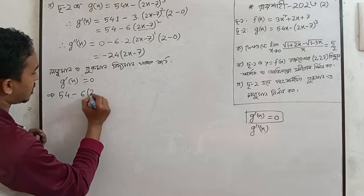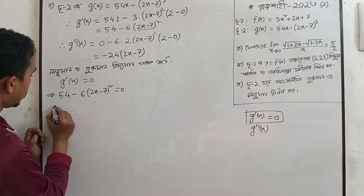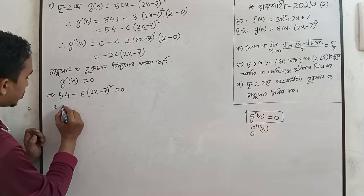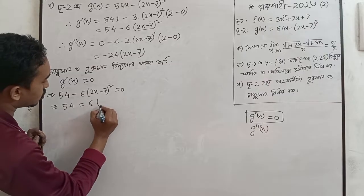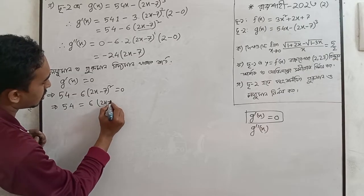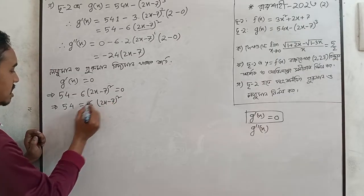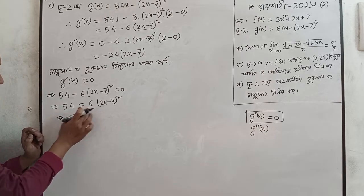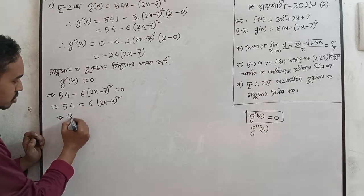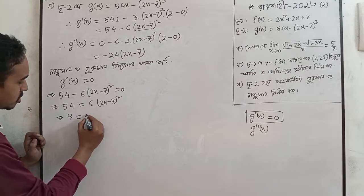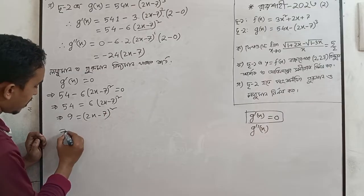2x minus 7 squared. The calculation gives 54 equals 6 times 2x minus 7 squared. The calculation is 54 times 2x minus 7 squared.